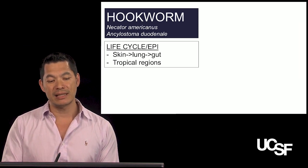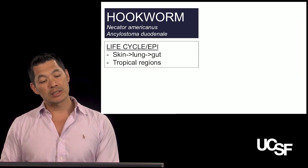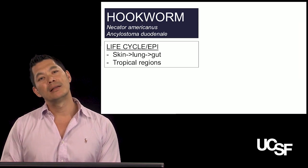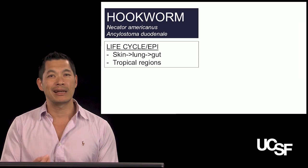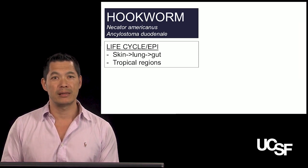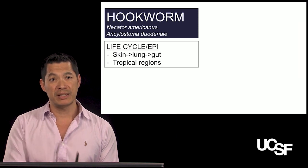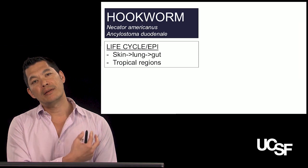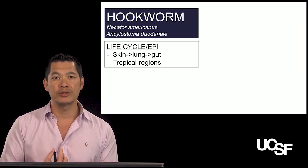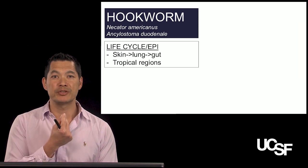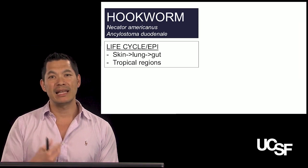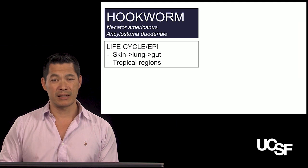It's similar to ascaris in terms of loving the lungs. You're walking around barefoot in an area where hookworm is endemic, the larvae burrow through the feet, and you can get a rash or allergic reaction where the larvae burrow through your soles. Like ascaris, these parasites really love the lungs — they go to the lungs, affect the alveoli first, move to the bronchial tree, then migrate up the trachea, and you swallow it. The larvae mature into adult worms, the adults lay eggs, and the cycle continues from the soil.